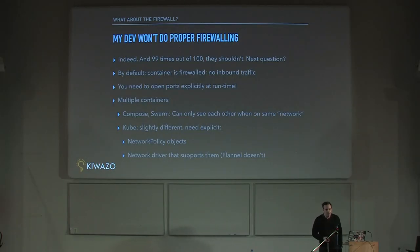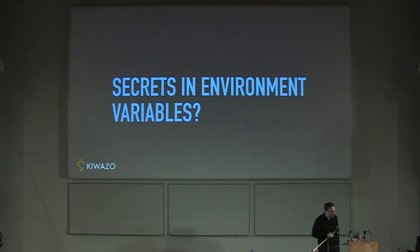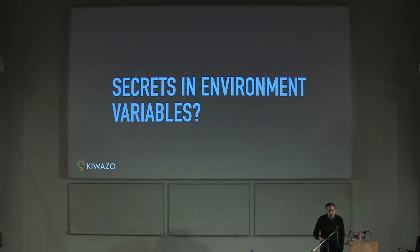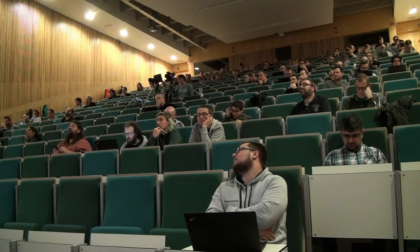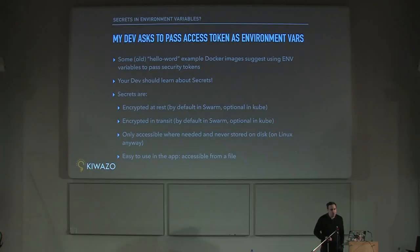Firewalling — my dev won't do firewalling, indeed they should not. By default, containers are firewalled by default, and if you want to open ports, you have to explicitly enable that. So your container should not mess with firewalls. Regarding secrets and environment variables: if you look at some very old, very bad Dockerfiles, they use environment variables to pass secrets — crypto keys, access tokens, etc. Well, those Dockerfiles are probably five years old, before something called secrets existed. Secrets are a great thing: they are encrypted at rest, encrypted in transit, only accessible to the containers that need them.